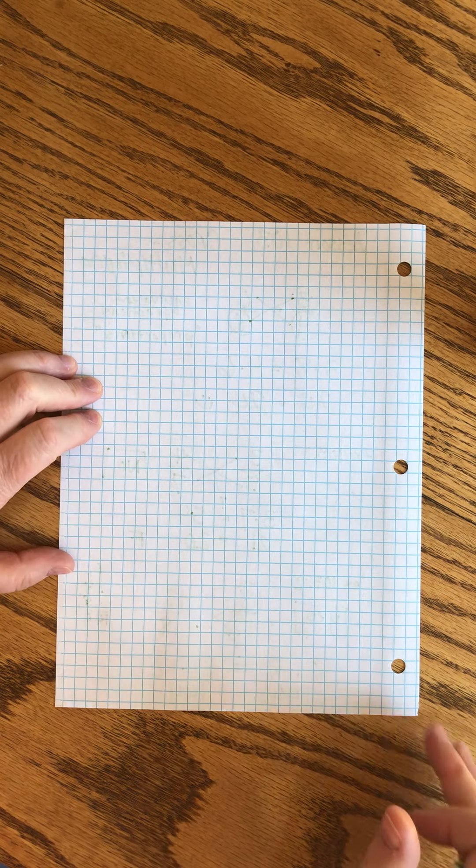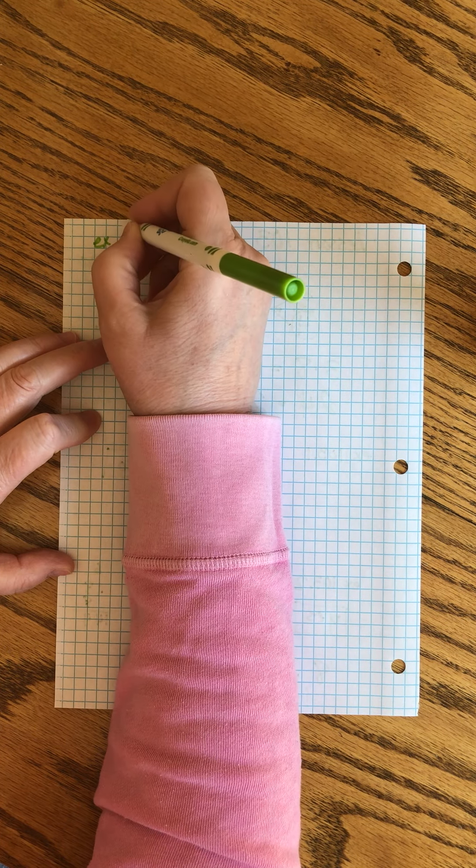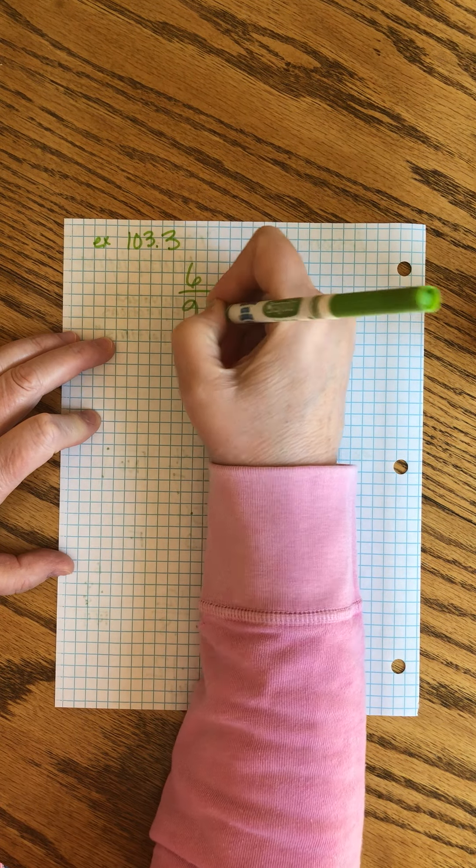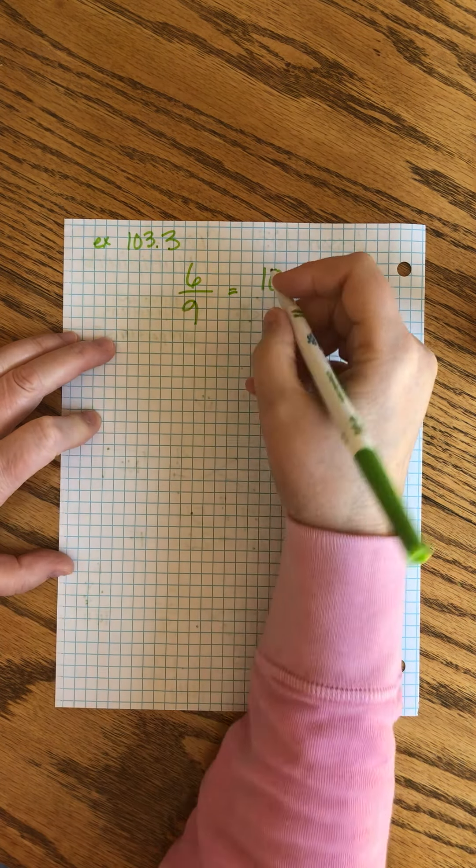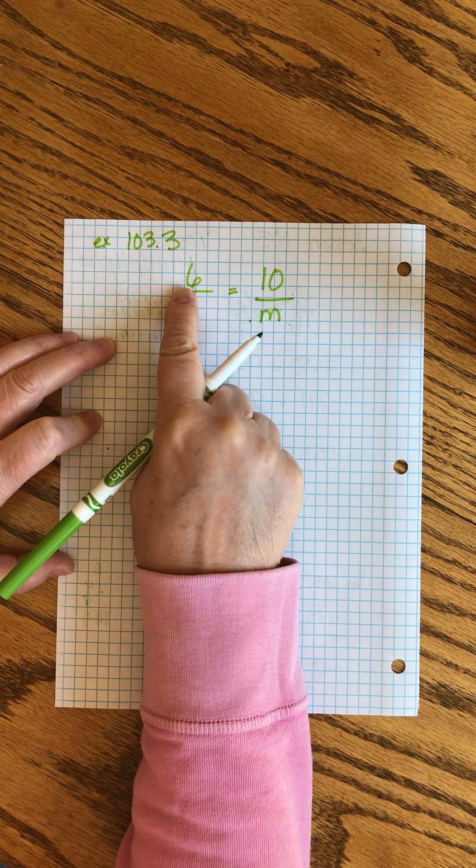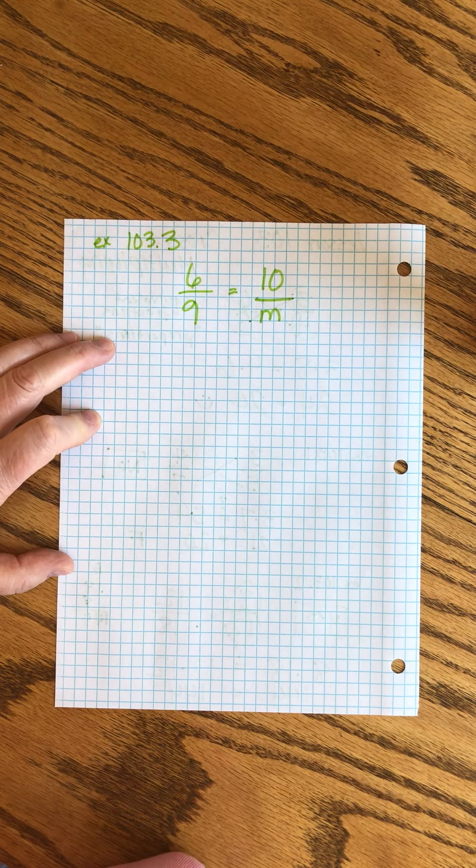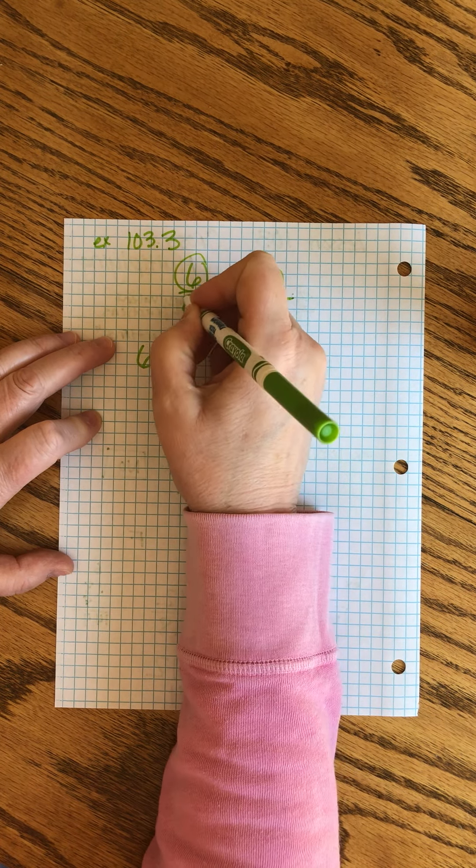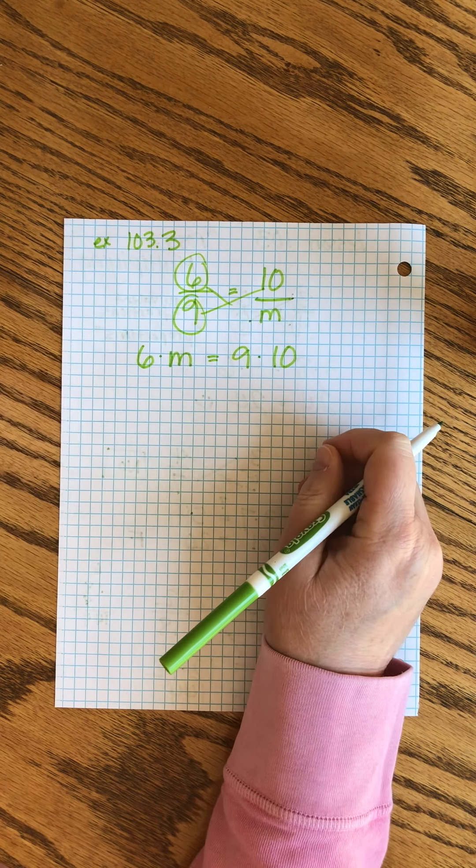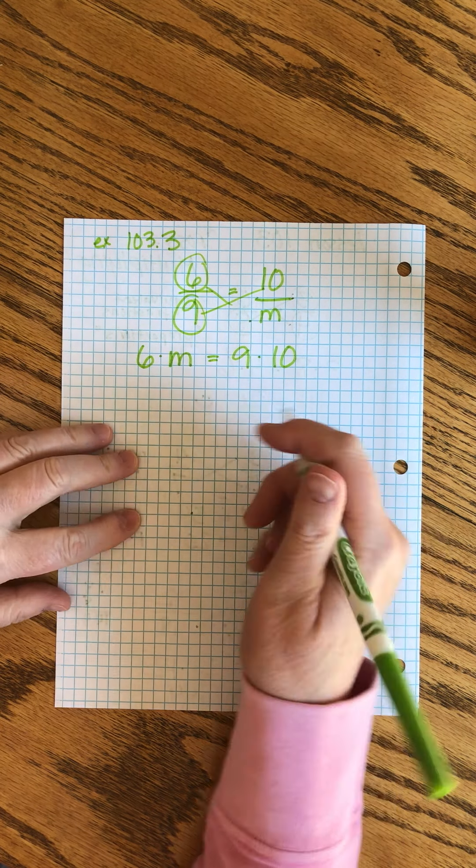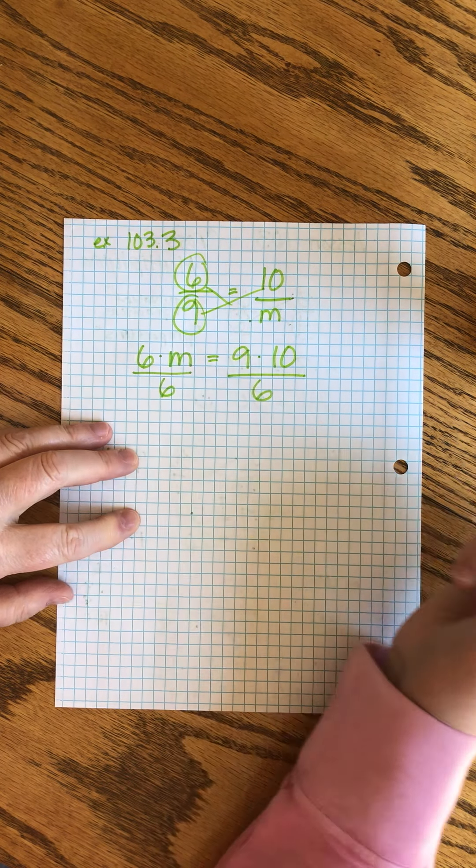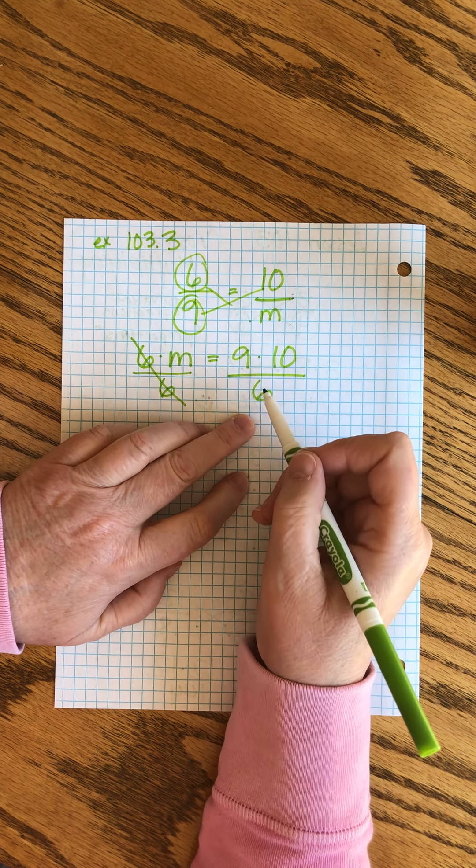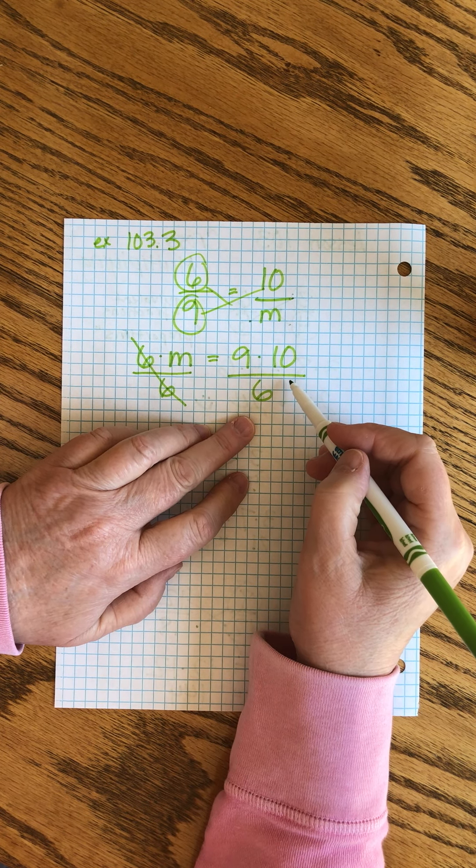We can also use it to answer riddles. 103.3: Check this out, we've got one fraction, and we want it to be equal to 10 over something. We don't know what number should go there. We don't know an easy way to multiply 6 by something to get it to be 10. So what we do is we use cross multiplication to solve for m. We start here and we go, if we multiply 6 times m, that's got to be equal to 9 times 10. Make sense? 6 times some number equals 9 times 10. And then we divide this side by 6 to get the m by itself.